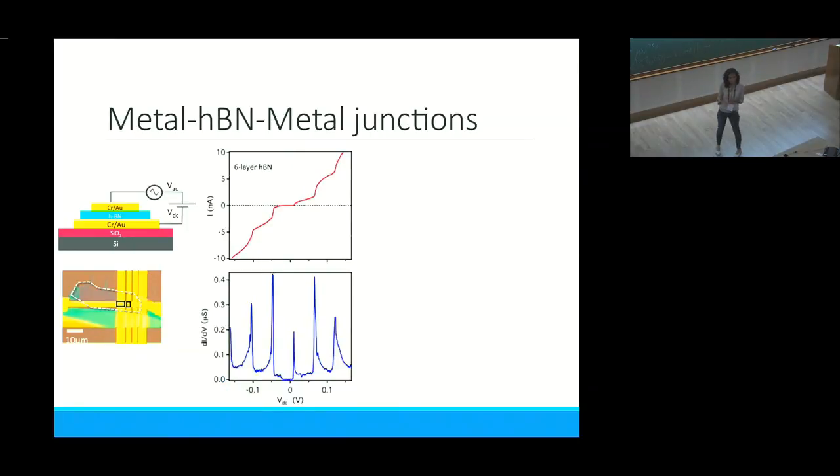What was interesting is that even when the thickness of boron nitride was pretty large, where you shouldn't expect tunneling, many times we have situations where the current versus voltage curves showed step-like features. If I take a derivative, that looks like equally spaced peaks.